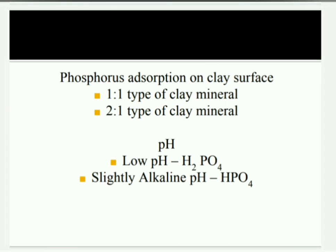2:1 type clay mineral has a net negative charge in slightly acid soil. This negative charge attracts positive charges to neutralize, so the negative charge attracts polyvalent or divalent cations. These cations in turn attract the negative phosphate ion, so the phosphate ion is adsorbed and becomes unavailable to crop plants.